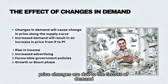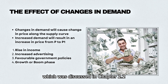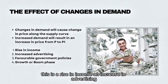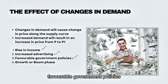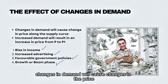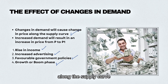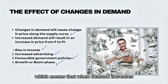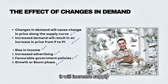Price changes are due to the factors of demand, which were discussed in chapter 2.2. This includes a rise in income, an increase in advertising, favorable government policies, and economic growth or boom phase. Because of these factors, changes in demand will cause changes in price along the supply curve.